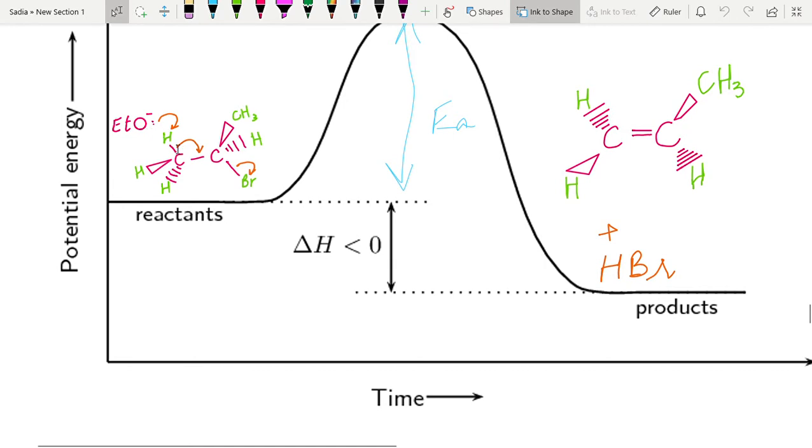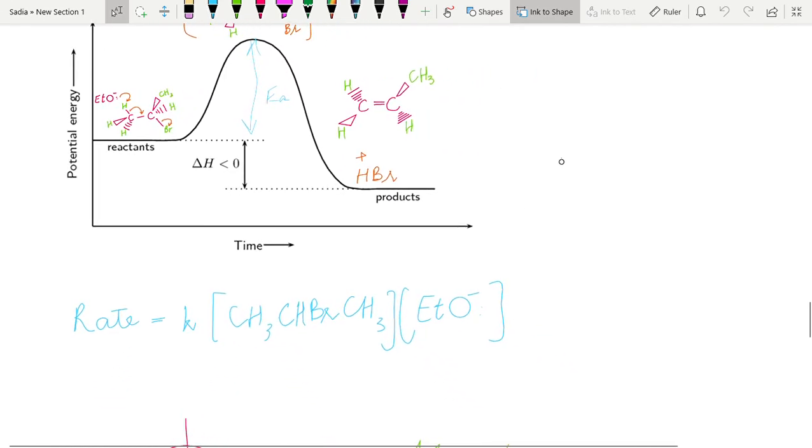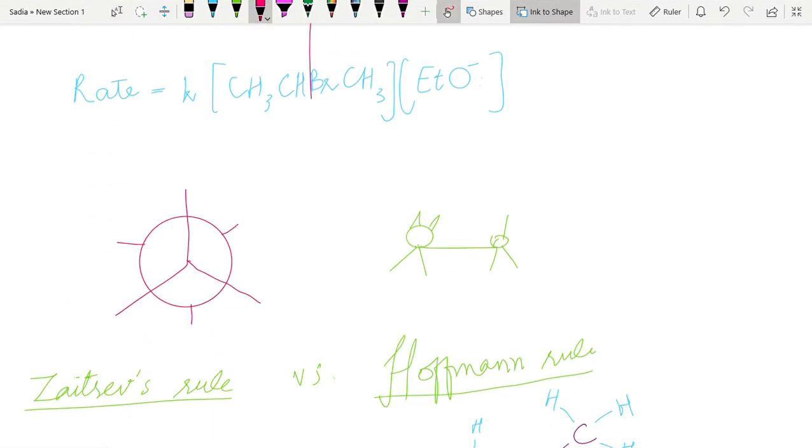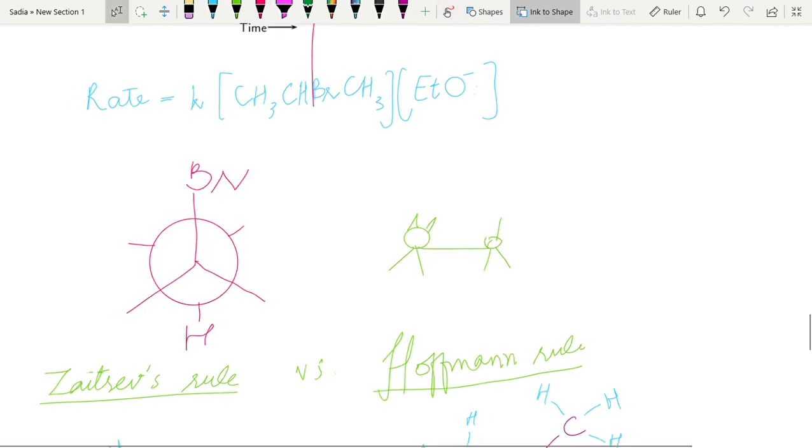So this is known as anti-coplanar arrangement. If I say that I have bromine over here, I have bromine over here, I must have hydrogen over here. So the leaving group and the incoming group should be anti-coplanar.